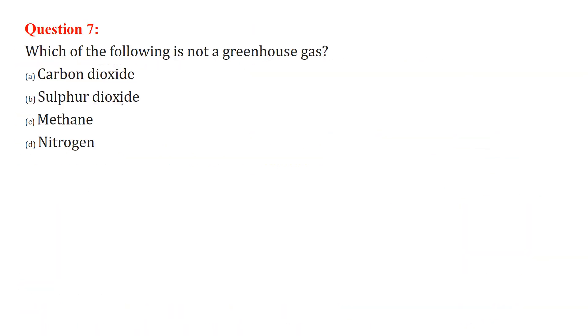Which of the following is not a greenhouse gas? Nitrogen is not a greenhouse gas. Carbon dioxide, sulfur dioxide, and methane — they all are greenhouse gases.